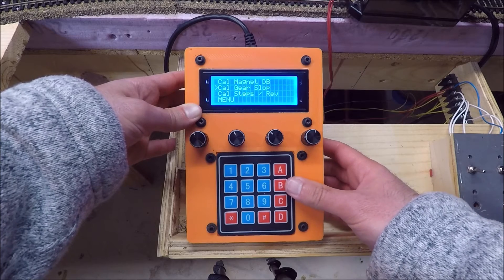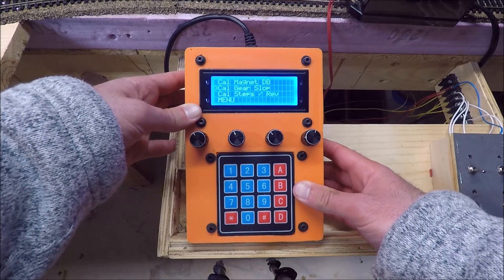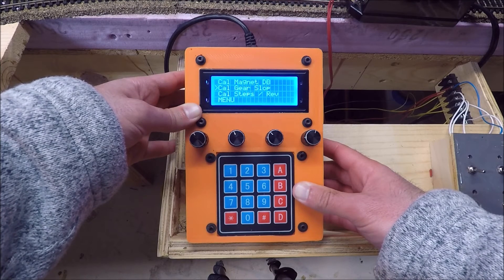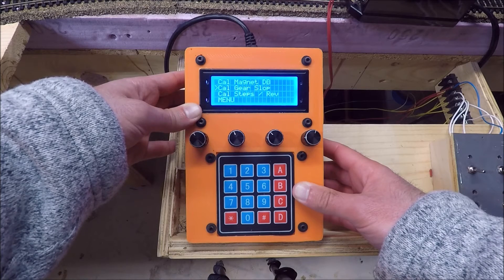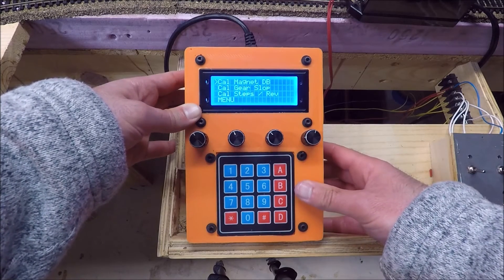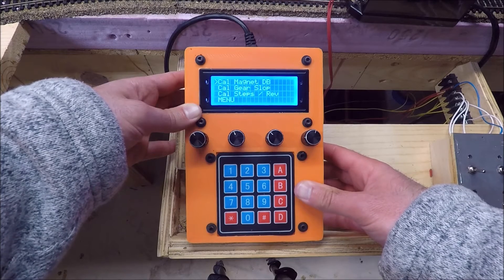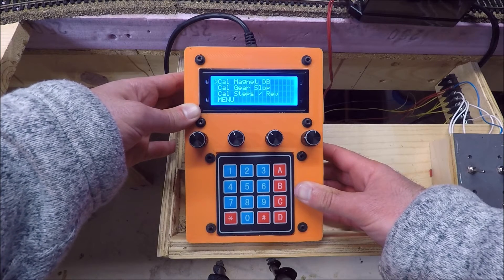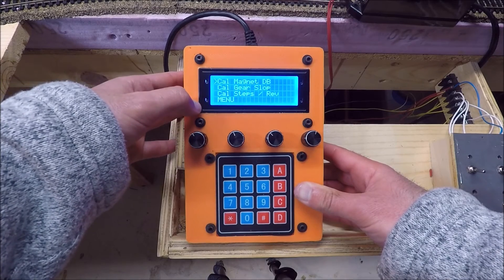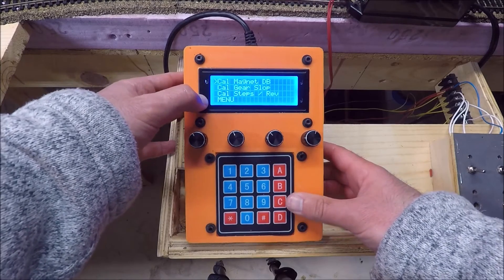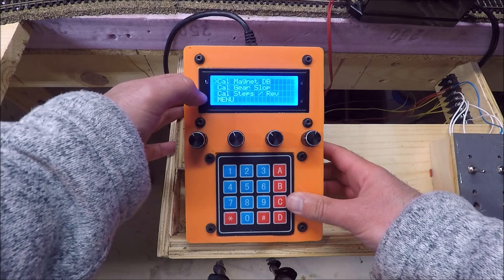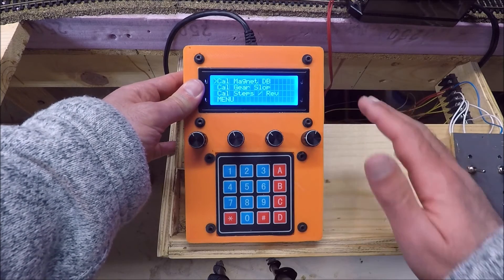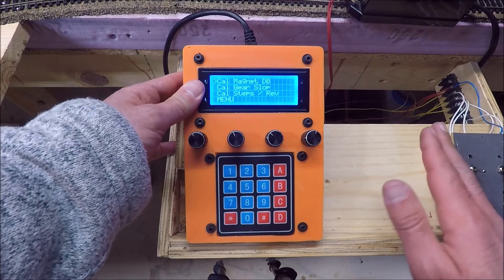The next one is calibrating gear slop. I call it gear slop. It's backlash, right? So if you have any backlash in your gears, this takes that into account and helps negate it whenever it's moving in automatic mode. And you can calibrate the magnetic deadband. Again, there's a hall effect sensor in there. And that hall effect sensor isn't the most precise piece of measurement equipment. So this helps you negate any of that unknown using this right here. So again, all three of these calibrations can be done without ever having to get inside the program. And it saves it into the controller. So once you do it, and as long as you don't mess with the turntable, you won't have to do it again.